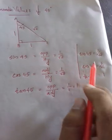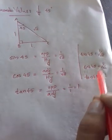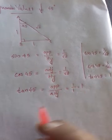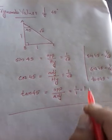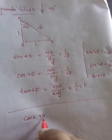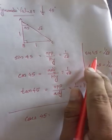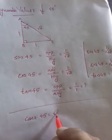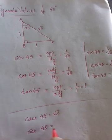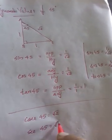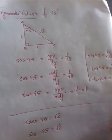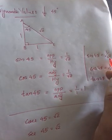The values of 45 degrees: sin 45 is 1 by root 2, cos 45 is 1 by root 2, tan 45 is 1. And next, three values. Cosec 45 is the reciprocal of sin 45, that is root 2. One by root 2 reciprocal is root 2.